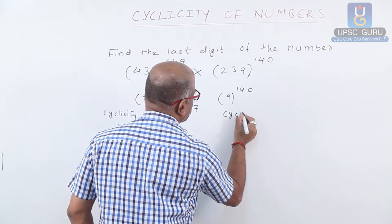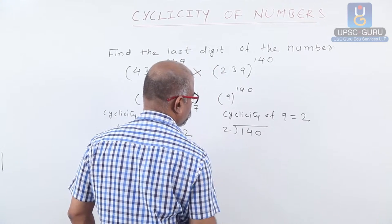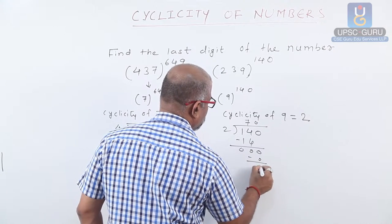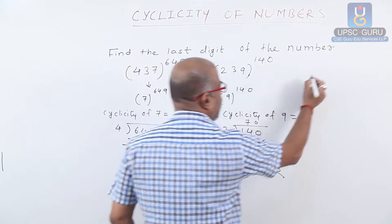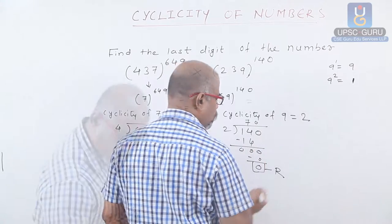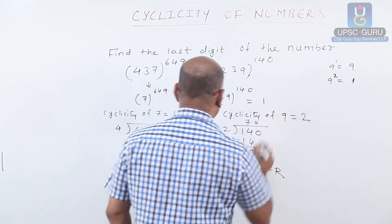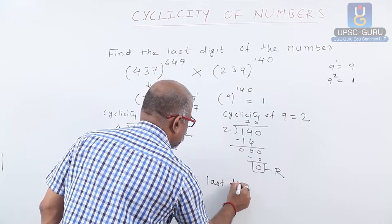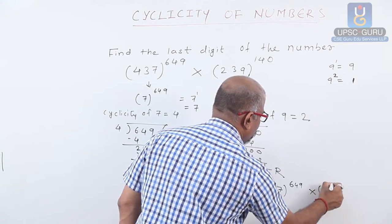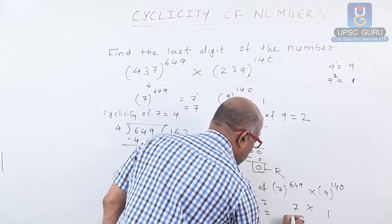Cyclicity of 9 equals 2. Divide 140 by 2 — remainder is 0. We have 9 to the power 1 equals 9, and 9 squared has last digit 1. When we get remainder 0, we consider 9 to the power 2 — last digit is 1. Therefore, last digit of 7 to the power 649 into 9 to the power 140: last digit of first number is 7, last digit of second number is 1. We have 7 into 1 is 7.